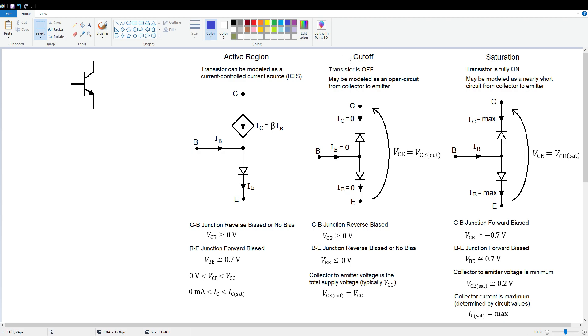Let's look at cutoff next. In the cutoff region, the transistor is turned off, and it can be modeled as an open circuit from collector to emitter. The characteristics to look for that indicate cutoff are the collector-base junction is reverse biased, same as we had in the active region. VCB is greater than or equal to zero. But in this case, the base-emitter junction is either reverse biased or has no bias. In other words, we're not turning on the base-emitter junction, so no base current will be injected.